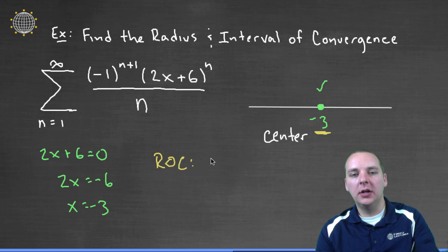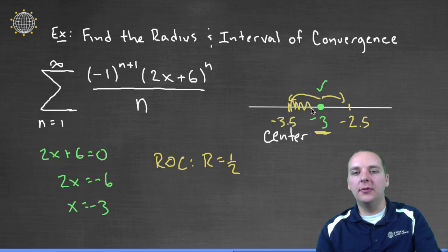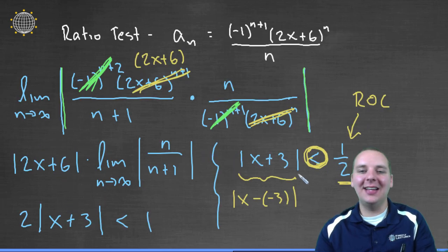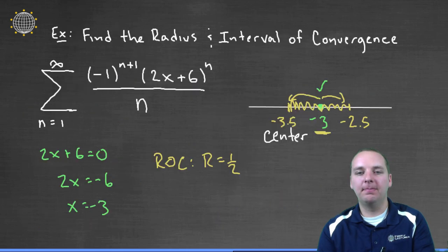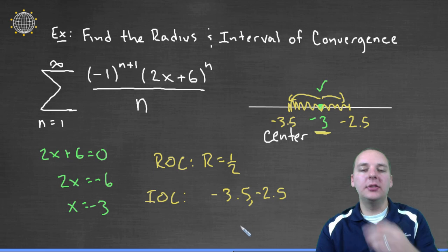So the radius of convergence is r equals a half, and we can go half a unit above negative 3, and half a unit below negative 3. So that would put us at negative 2.5 and negative 3.5, and it's going to converge for any x's, for any x's that are less than that distance away from negative 3. So we can also write down our interval of convergence, or at least the majority of it. The interval of convergence will go from negative 3.5 up to negative 2.5.